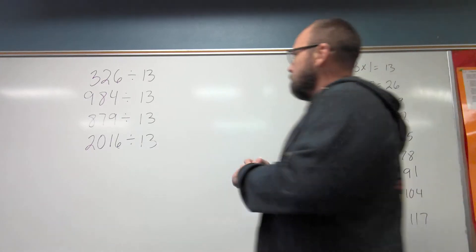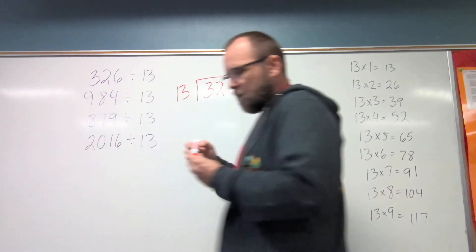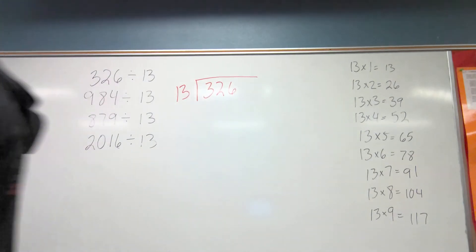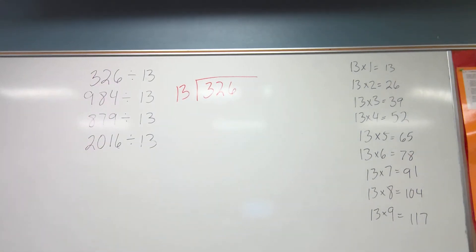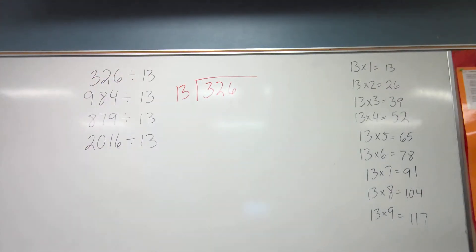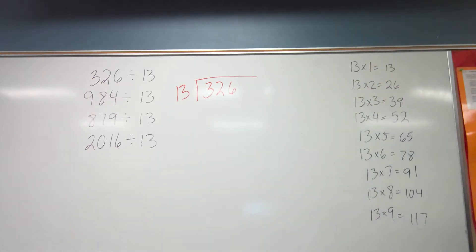So let's take the first one here. We have 326 divided by 13. Before I start, let me ask this question. What is the largest remainder I can have for this problem? 12. Because if I have 13, I need to add one more in my quotient. I can only have a remainder of 12. I will never have a remainder that is equal to or greater than my divisor. Never. Ever.